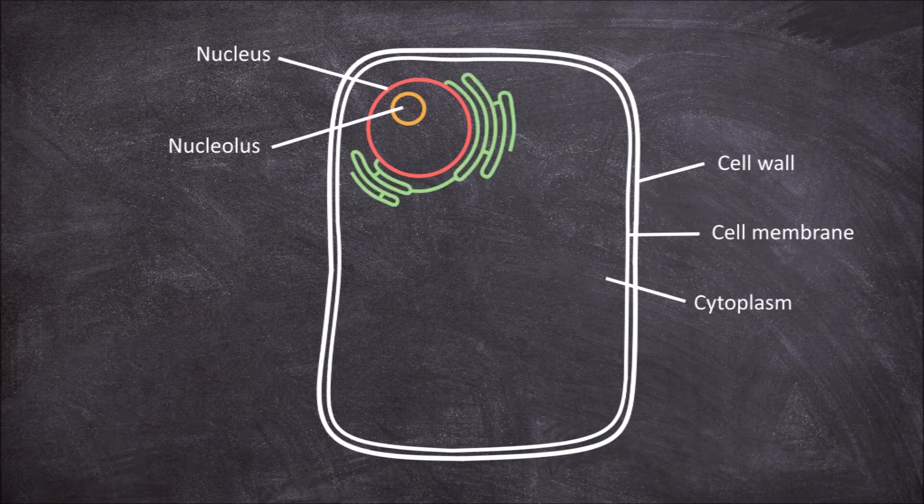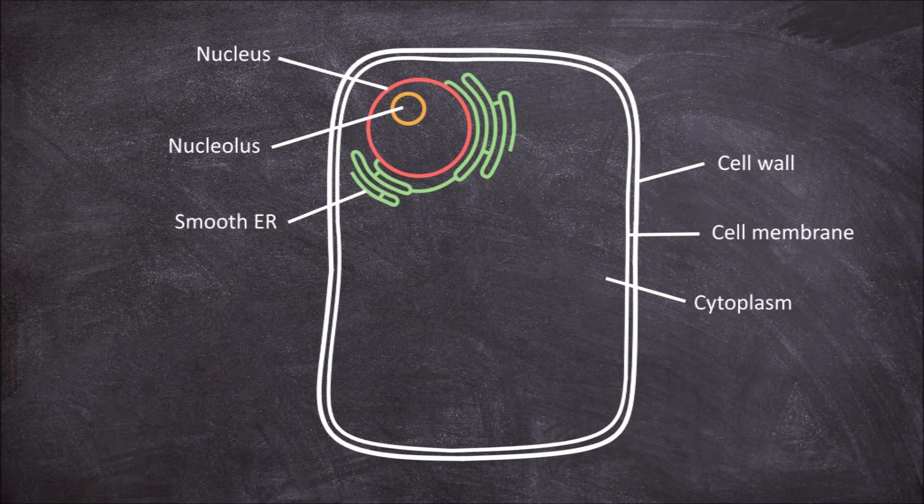The next organelle is the endoplasmic reticulum, or ER for short. The ER is made up of a network of tube-like structures. The ER can either have no ribosomes attached, this is called the smooth ER.